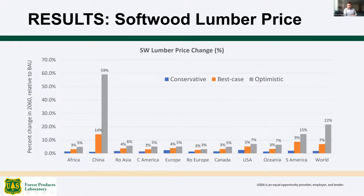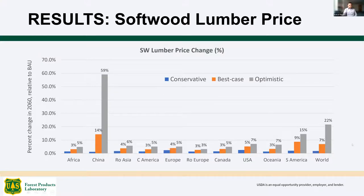Our results show the magnitude of price increases due to different scenarios of mass timber consumption. At a global level in the extreme optimistic scenario, we see about a 22% increase in lumber prices worldwide. In the best case scenario, we have about a 7% price increase. There are similar ranges of increases in other countries at the individual level, but we see a huge increase in China — which is explained by the extremely high mass timber demand projected for China. Higher demand leads to higher price increases.